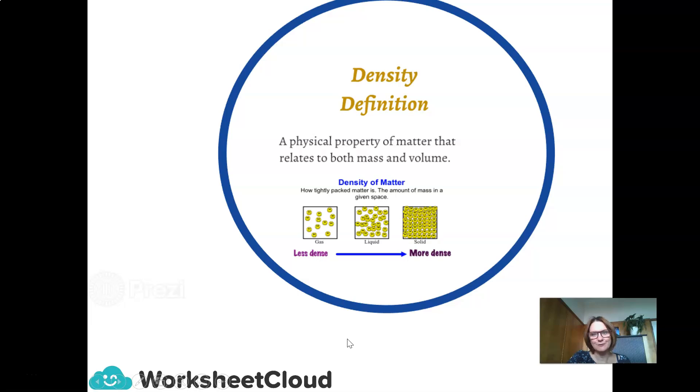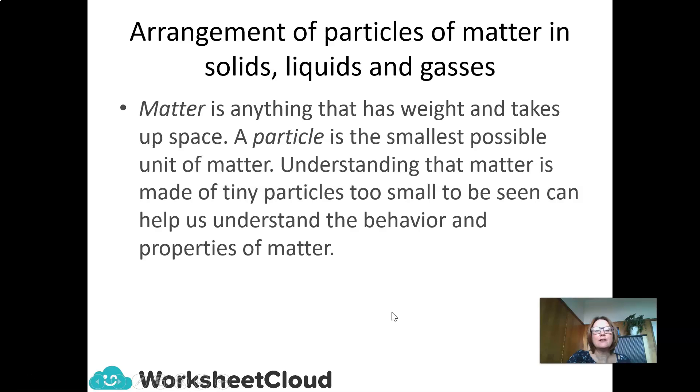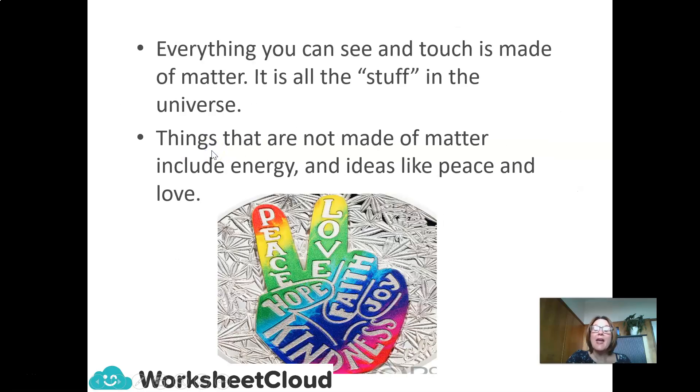Let's get started. The arrangement of particles of matter in solids, liquids and gases. As you know, matter is anything that has weight and takes up space. A particle is the smallest possible unit of matter. Understanding that matter is made up of tiny particles, too small to be seen, can help us understand the behavior and properties of matter. Everything that you can see and touch is made up of matter. Things that are not made up of matter include energy and ideas, like peace and love and faith and joy and hope, and one of my favorites, kindness.